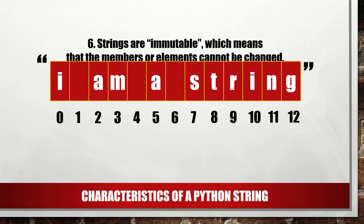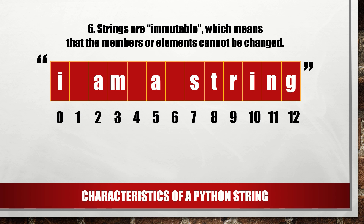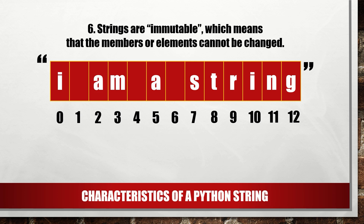Strings are immutable, which means that the members or elements cannot be changed. If you try to assign a value or change the value of a particular index or position, Python will give you an error. To effect a change in the values of a string, you will have to create a new string derived from the original string.